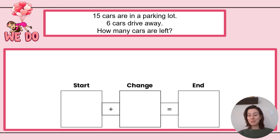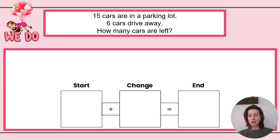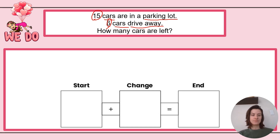Let's first do Step 1: understand it — let's read the problem. Go ahead and read with me: 15 cars are in a parking lot. Six cars drive away. How many cars are left? Let's go ahead and circle or underline what we've been given: I have 15 cars in a parking lot, six cars drive away, and my question — I'll do a different color — how many cars are left?